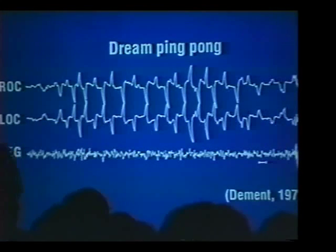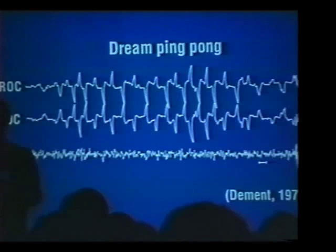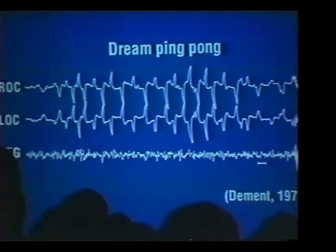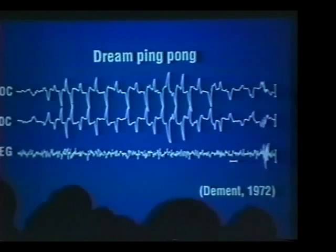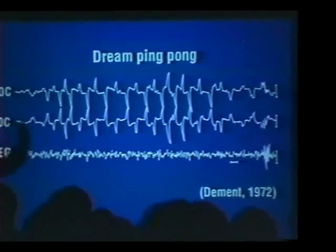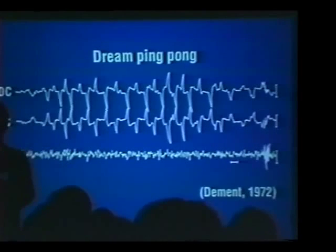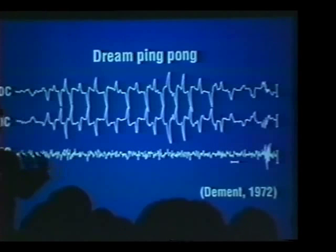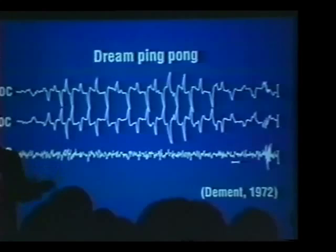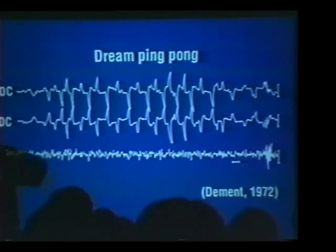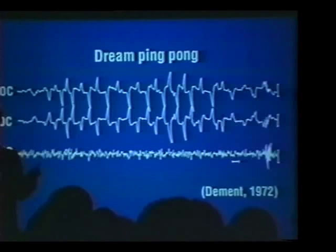I got the idea of how this could be done from experiments that had been done in the 50s and 60s with REM sleep — rapid eye movement sleep — in which researchers would wake subjects up. We have two phases of sleep every night: non-REM or deep sleep, and REM sleep, dreaming sleep, where we have vivid dreams, and these two alternate approximately hour to hour.